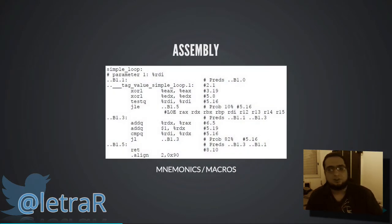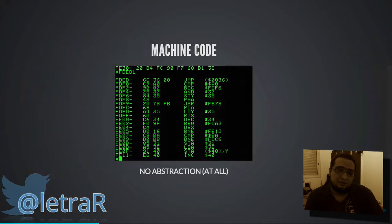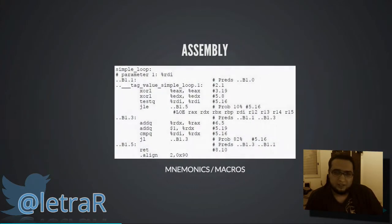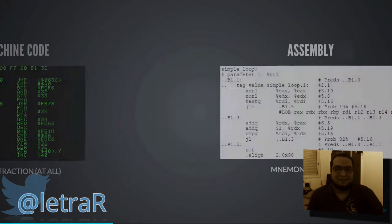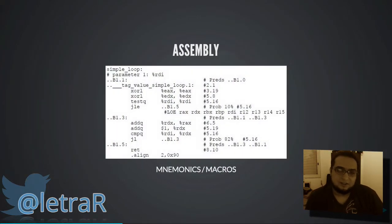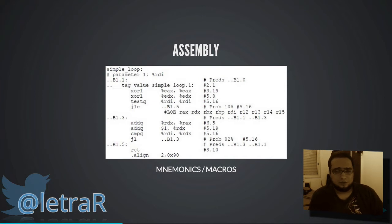Quando o assembly surgiu, a galera que programava em código de máquina achou muito ruim, falou: 'se no final vai virar código de máquina e eu já escrevo código de máquina, pra que vou escrever desse jeito? Isso é besteira, coisa de quem não sabe programar.' Uma pequena vantagem do assembly: quando havia outro processador com instruções parecidas, se você sabia o que uma instrução fazia num processador e ela tinha o mesmo nome no outro, ela fazia mais ou menos a mesma coisa.